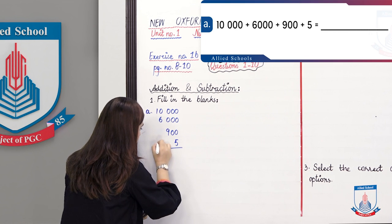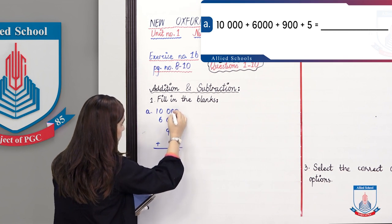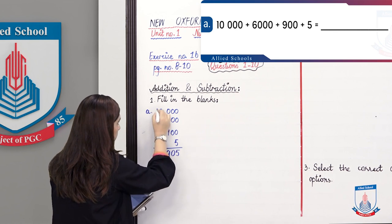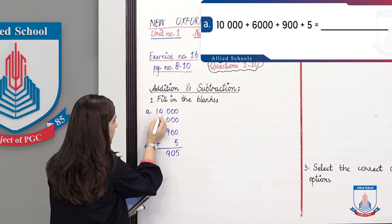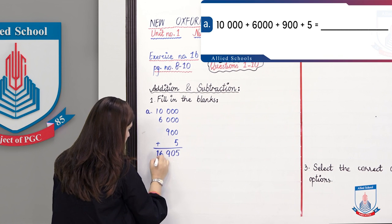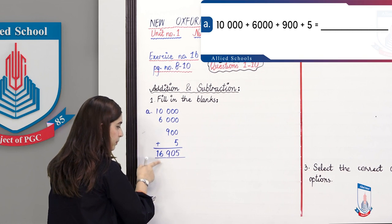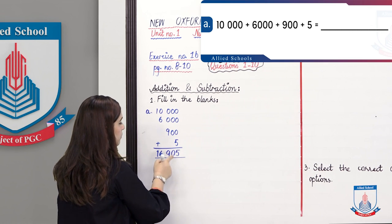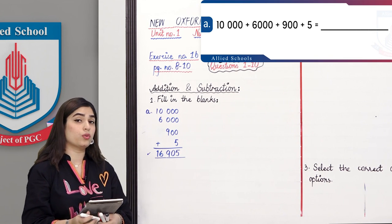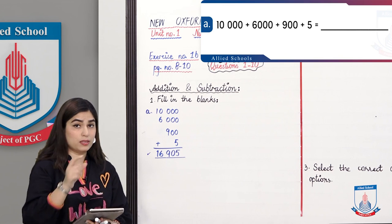Now if we add them: starting from the ones place — 5, then zeros giving 0, 0 plus 9 is 9. Then 10 plus 6 is 16. The answer is 16,905. You can add vertically to get the numbers, and this kind of mental maths should come easily when you write these values.